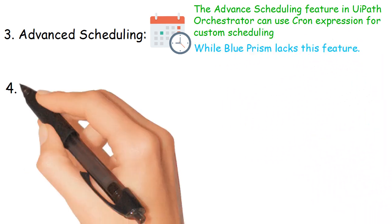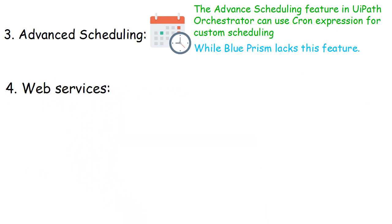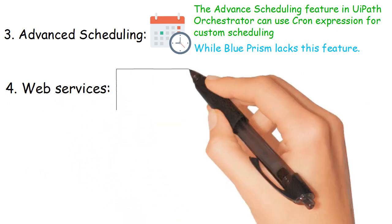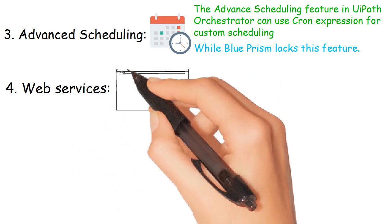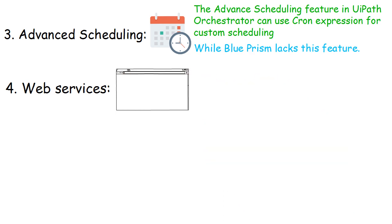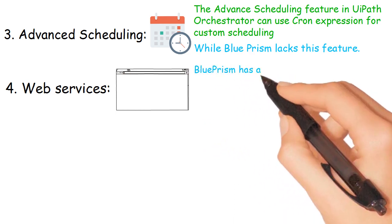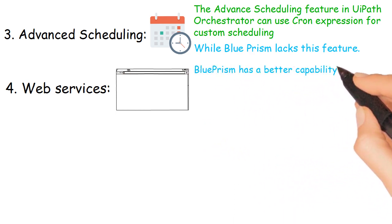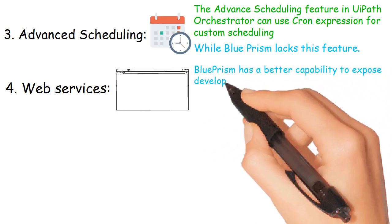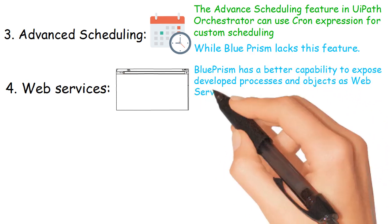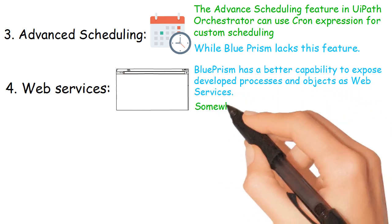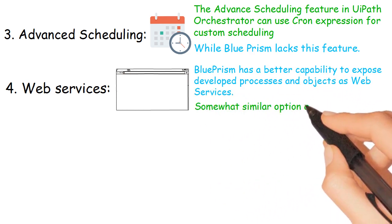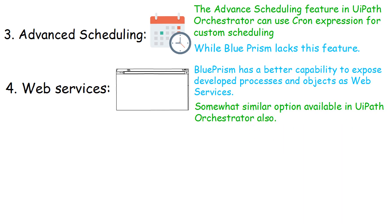Number 4: Web Services — exposing developed processes and objects as web services. Blue Prism has a better capability to expose developed processes and objects as web services, though a somewhat similar option is also available in UiPath Orchestrator.